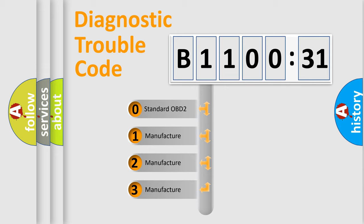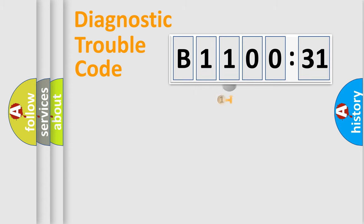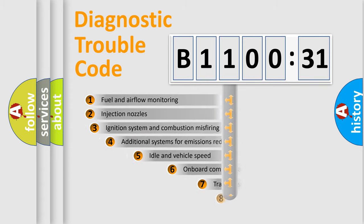If the second character is expressed as zero, it is a standardized error. In the case of numbers 1, 2, 3, it is a more prestigious expression of the car-specific error.